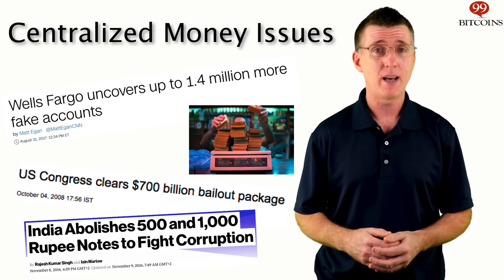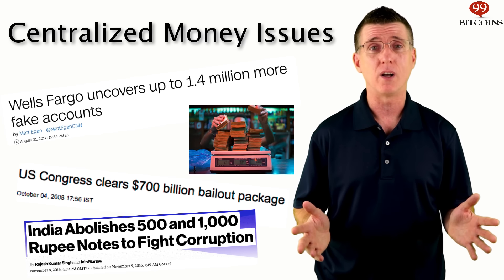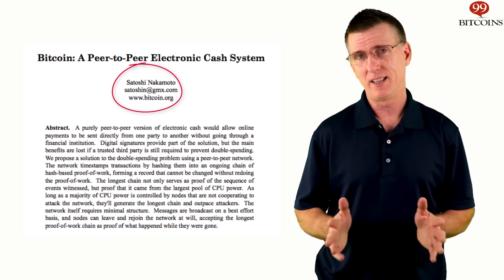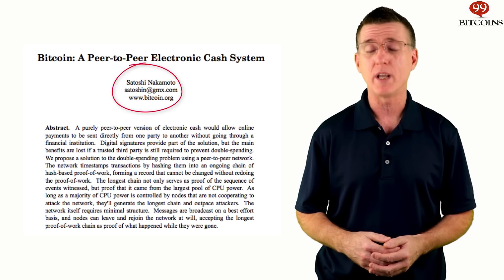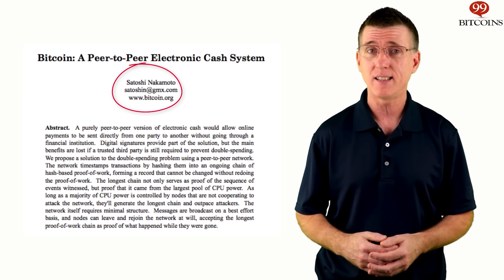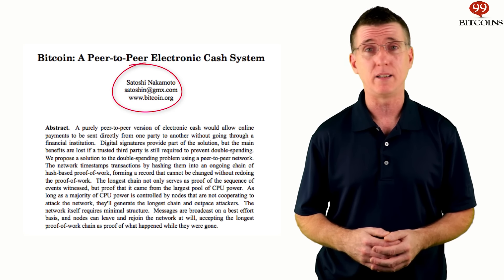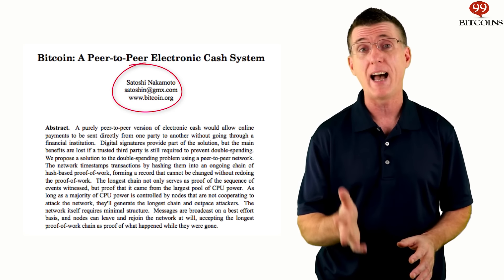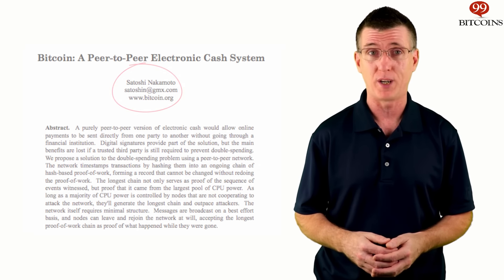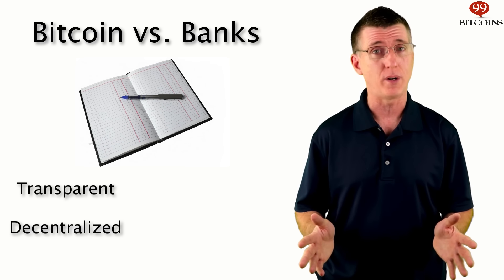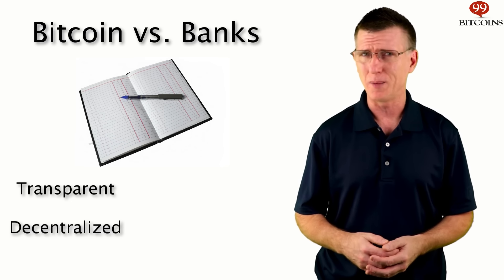Creating an alternative to the current monetary system seemed like a lost cause, but then everything changed. In October of 2008, a document was published online by a guy calling himself Satoshi Nakamoto. The document, also called a white paper, suggested a way of creating a system for a decentralized currency called Bitcoin. This system claimed to create digital money that solves the double spend problem without the need for a central authority. At its core, Bitcoin is a transparent ledger without a central authority.